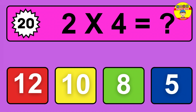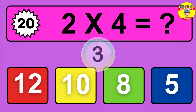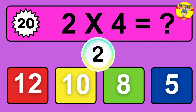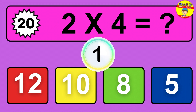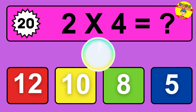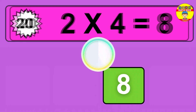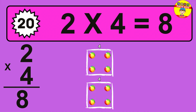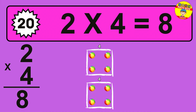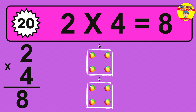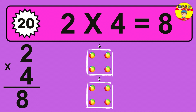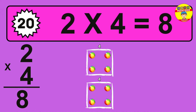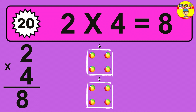Question 20. 2 times 4 equals what? The answer is 2 times 4 is 8. To calculate, we have 2 groups with 4 balls each one. So, how many balls do we have? 8 balls.